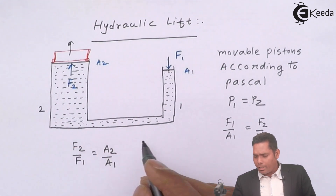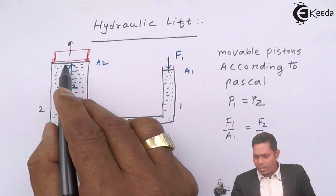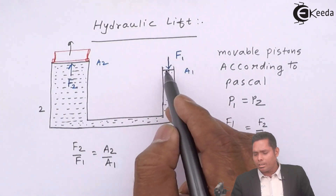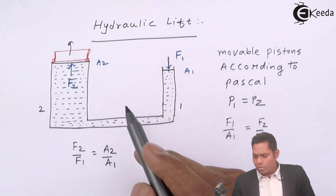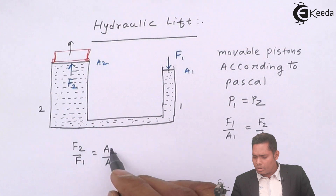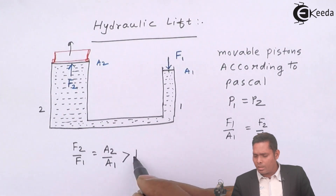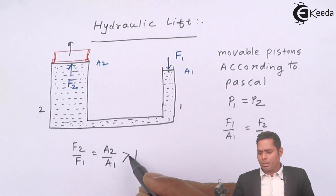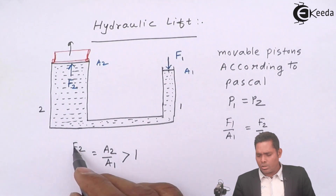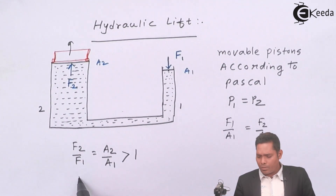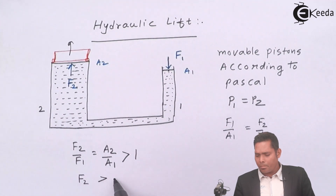As you can see, the area of cross section of this cylinder is more than that cylinder. Therefore the fraction A2 upon A1 is greater than one. If it is much greater than one, this ratio will be much greater than one, so this implies that the force F2 is greater than — or much greater than — F1.